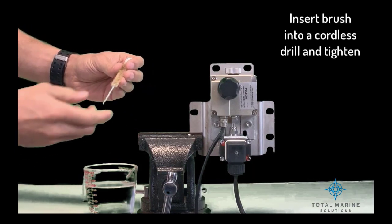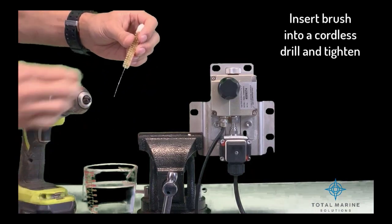Step 2. Insert the wire stem of the cell cleaning brush into a cordless drill and fix it.